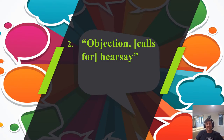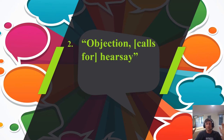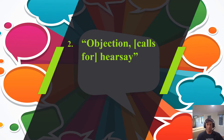The next evidentiary objection we're talking about is a huge one: objection hearsay. This is probably the number one objection that people doing mock trial think they understand, but know only a sliver of. They think hearsay very narrowly. When we cover hearsay in a full-on law school four-credit course, we cover it for weeks. It has more than 30 exceptions. It's very complicated, always tested on an evidence exam, and always tested on the bar exam.